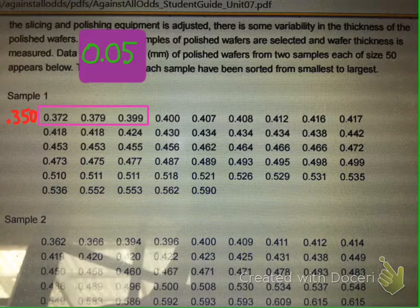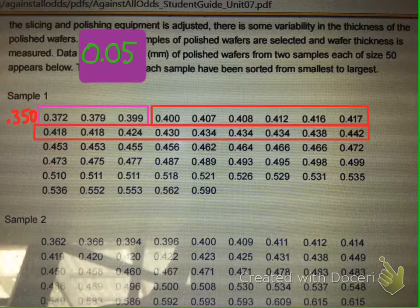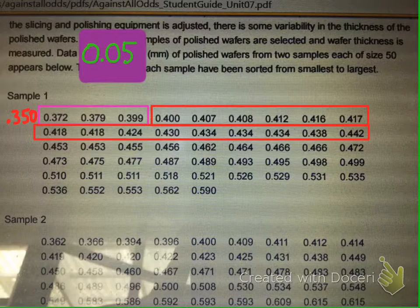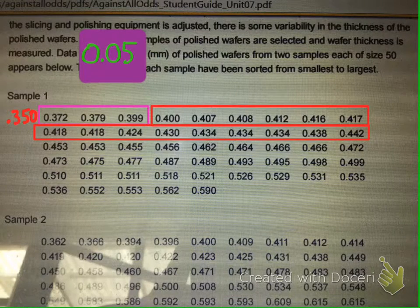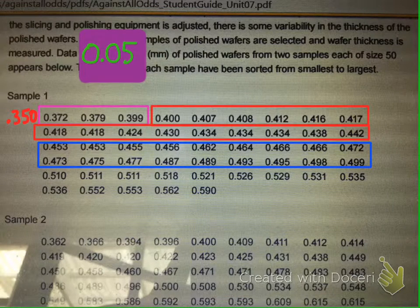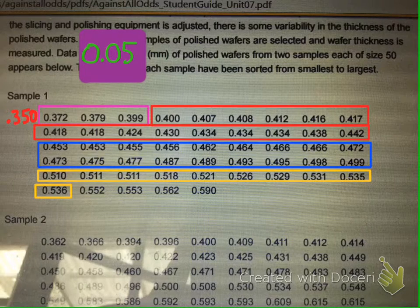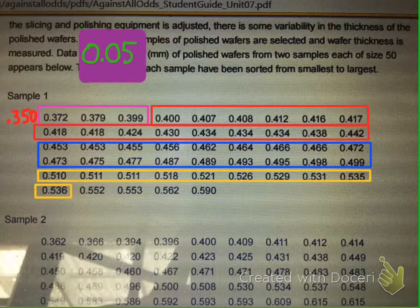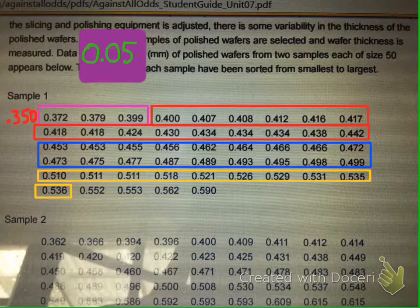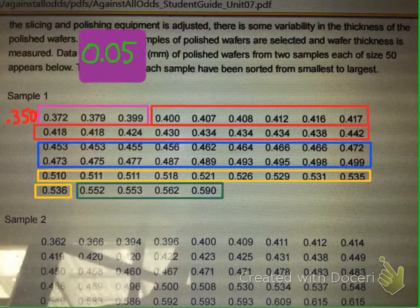The next class of data goes all the way up to 0.442, because then the next class would start at 0.45. So the lowest value in our next set is that 0.453, and that goes all the way up for the next two rows, up to 0.499. The next data point after that is 0.510, and so that goes into the fourth data class that goes all the way up to 0.536.